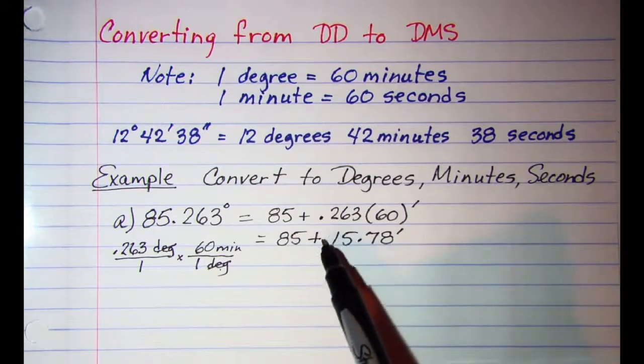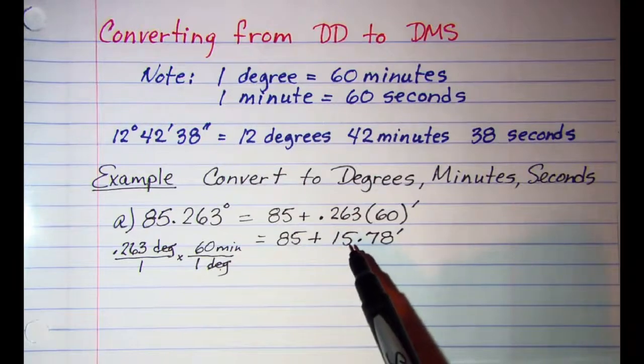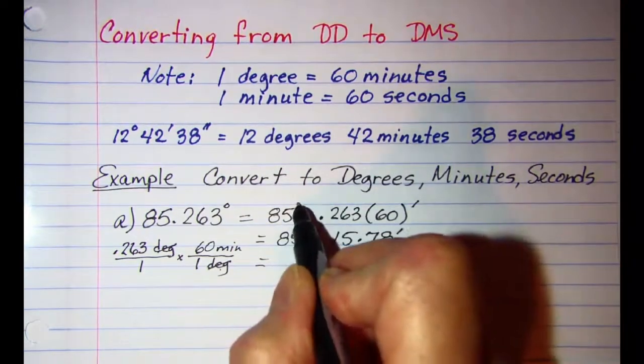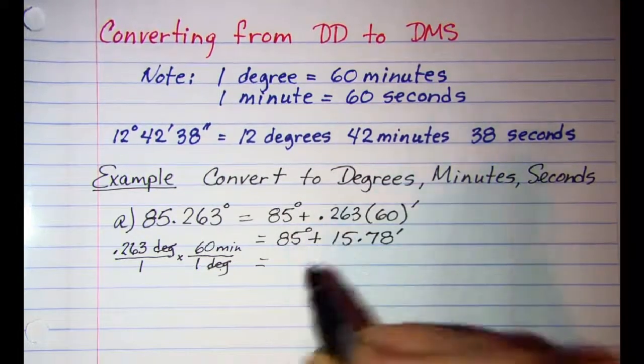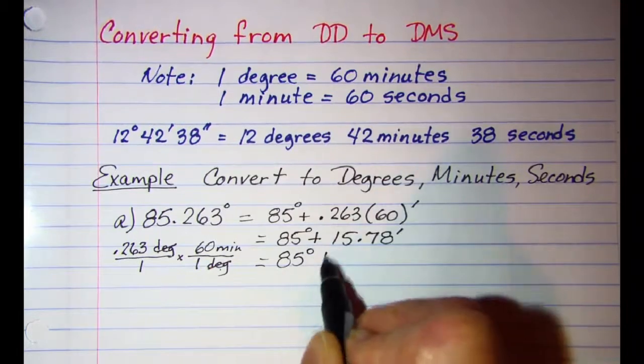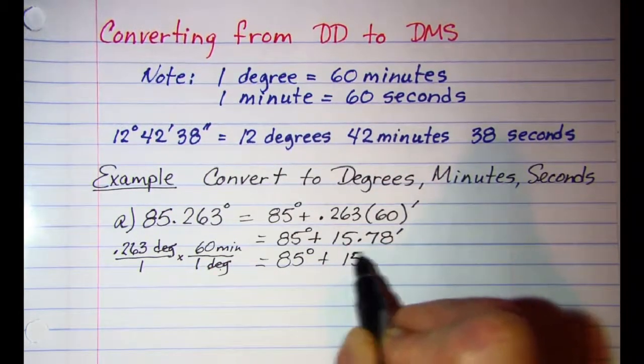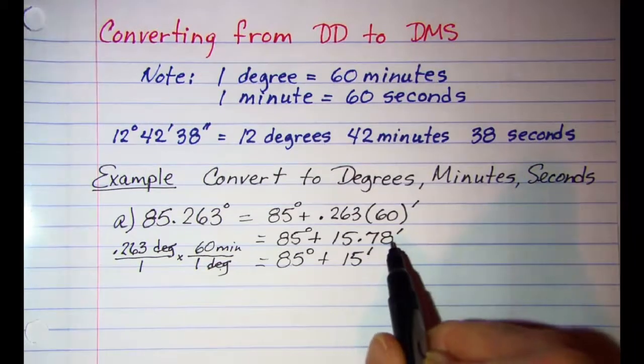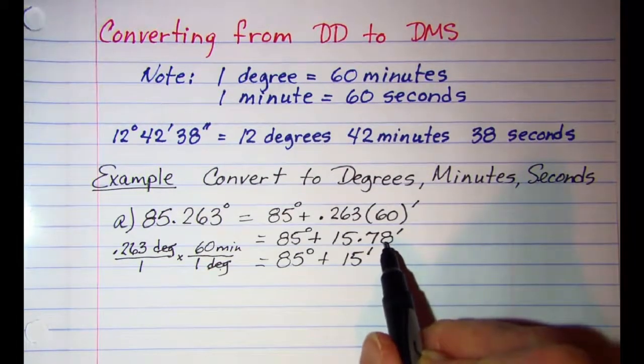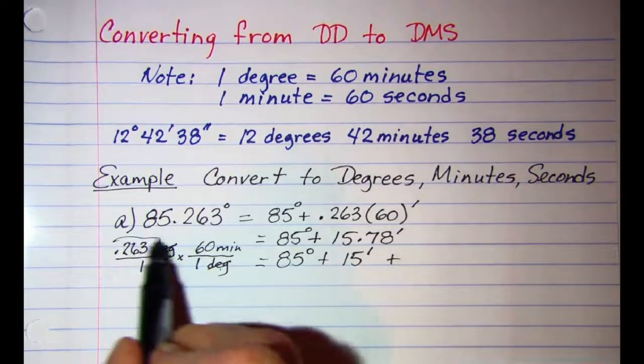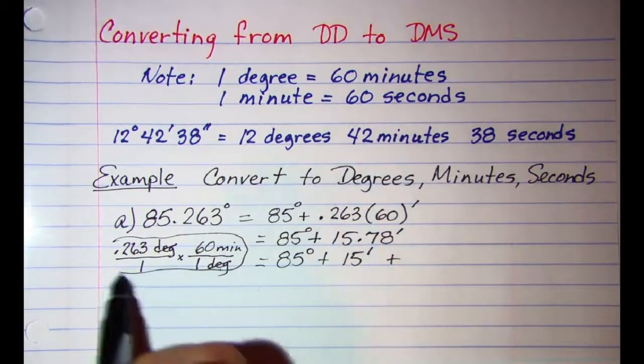This 15 is minutes, so I have, oh and I forgot this is degrees. 85 degrees, 15 minutes, and then this is 0.78 of a minute, so I need to convert that. Let's circle this, get this out of the way.